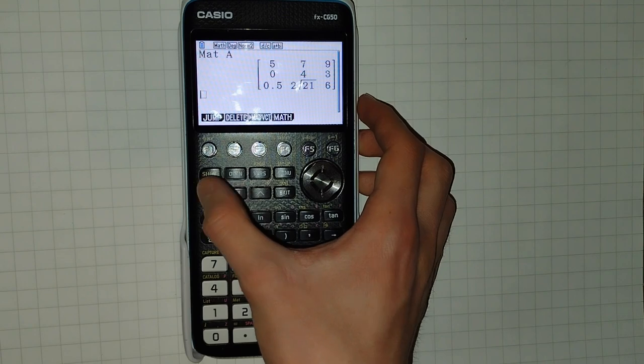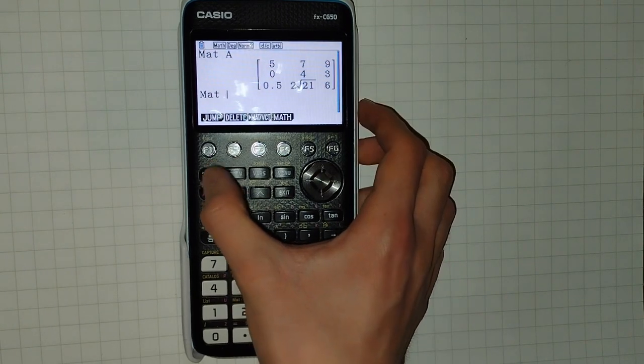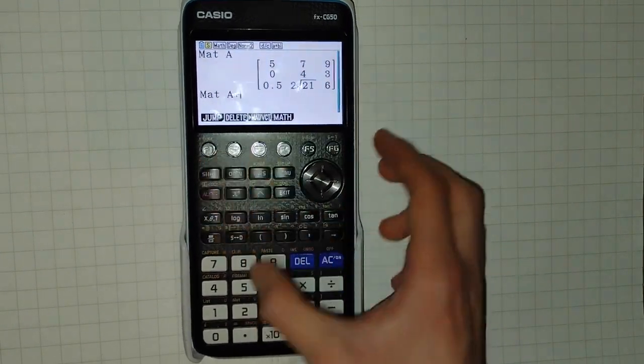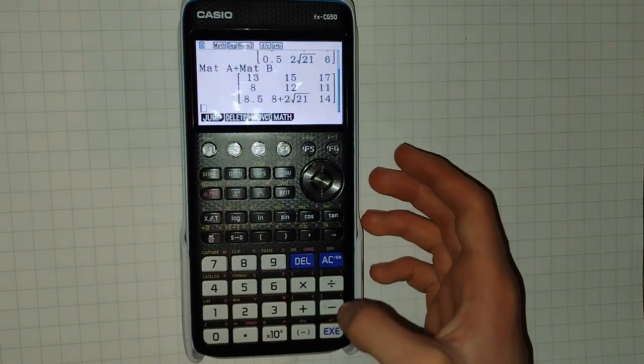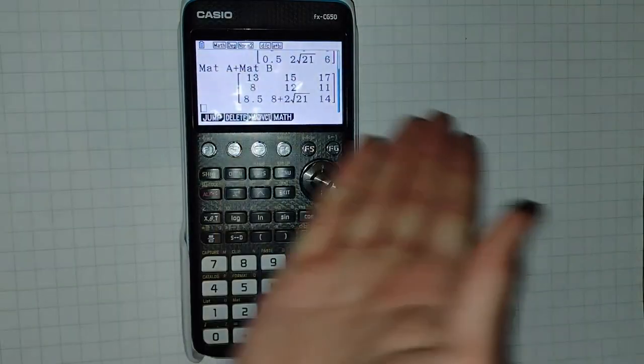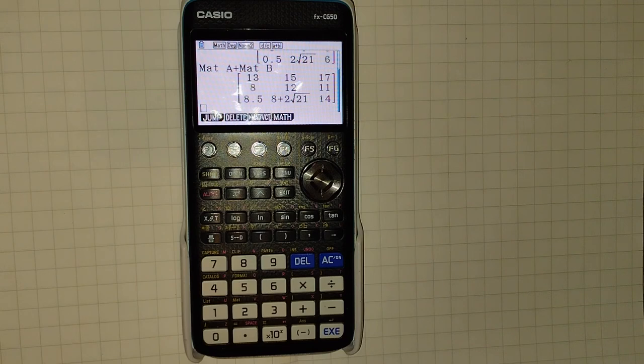You can add matrices, so Shift, Matrix, Alpha A plus Shift 2, Alpha B. And yeah, we can add them, so each element is added by 8.